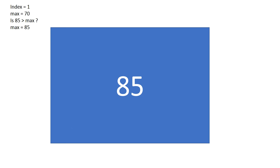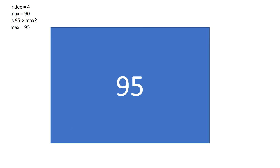Am I done? The answer is no — we still have to go through the rest of the elements in case there are values greater than 85. We continue this iterative process: is 90 greater than our current max of 85? Yes, so 90 is our new max. Next element is 30 — is 30 greater than 90? No, so max stays at 90. Then we come to 95 — is 95 greater than max? Yes, so 95 is our new max.